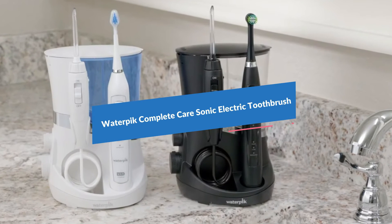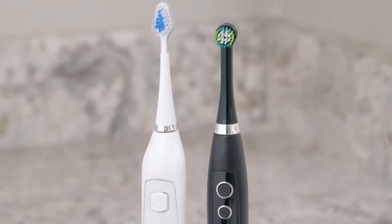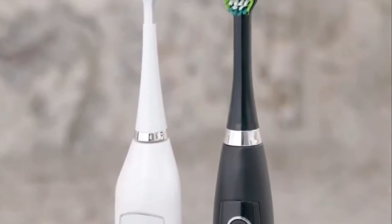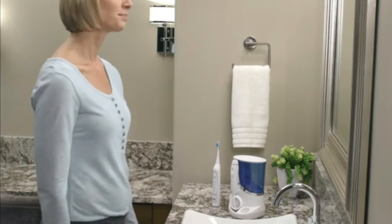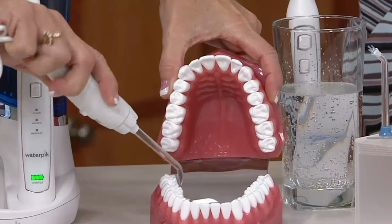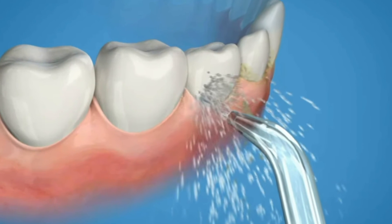At number 4, Waterpik Complete Care Sonic Electric Toothbrush. This gadget is dual purpose, as it includes both an electric toothbrush for basic cleaning and a water flosser for precision work around the gums and between teeth. The Waterpik Complete Care 9.0 Water Flosser and Sonic Toothbrush is the easiest and most effective method to floss, eliminating up to 99.9% of plaque from treated areas.